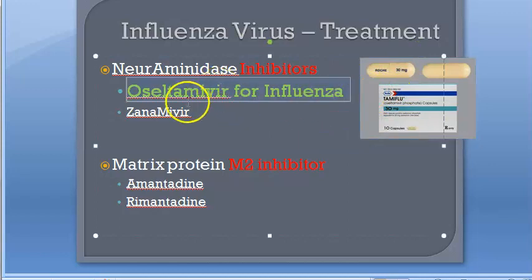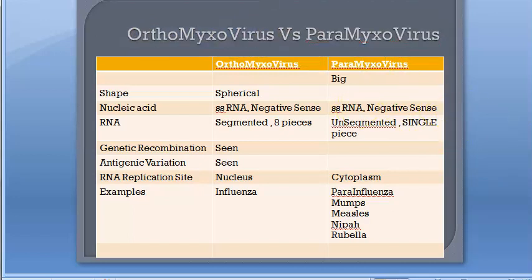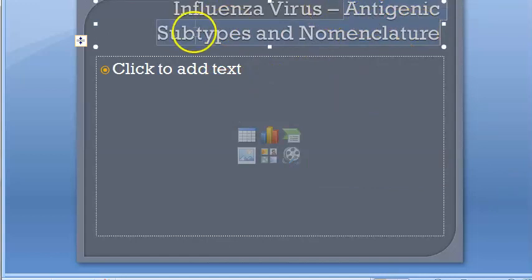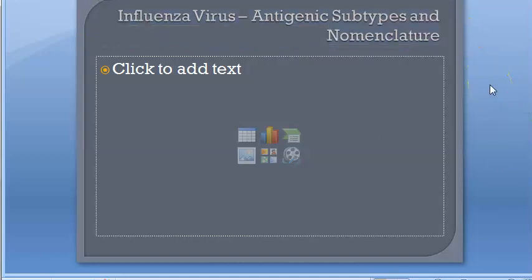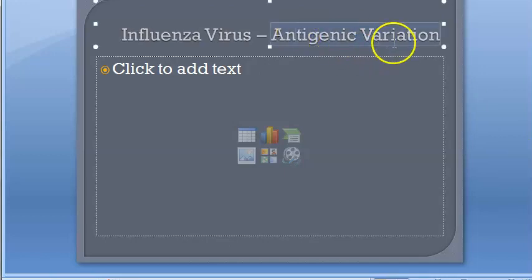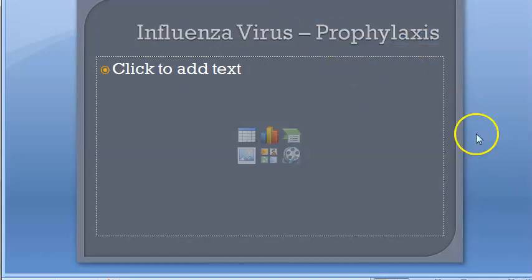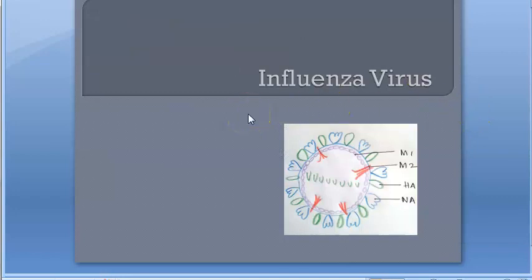Next, we will look at the actual morphology of the influenza virus, differences between orthomyxoviruses and paramyxoviruses — influenza virus belongs to orthomyxoviridae. We will also cover detailed morphology, antigenic subtypes and nomenclature, antigenic variation (which affects vaccine design), pathogenesis, and lab diagnosis of influenza virus. See you in the next video.